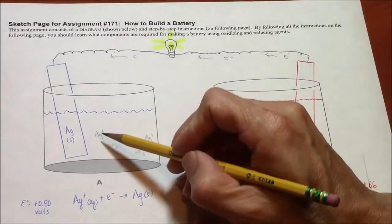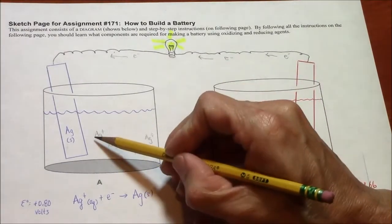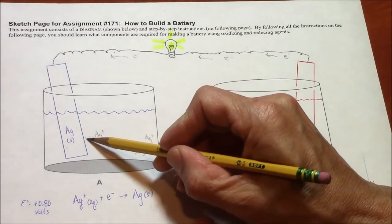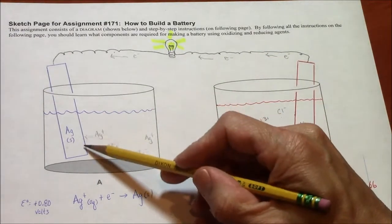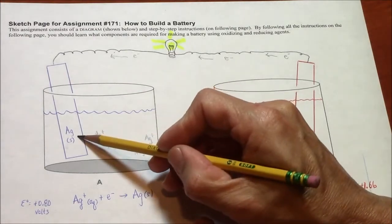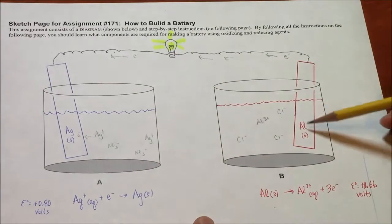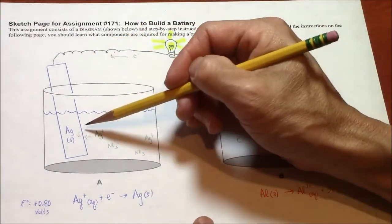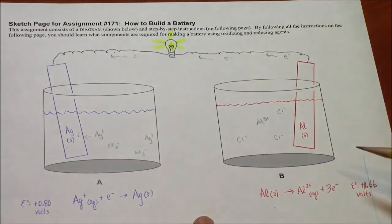So you have to imagine this silver ion actually swimming till it contacts the electrode, where the electron from the aluminum all the way around has arrived to initiate reduction.